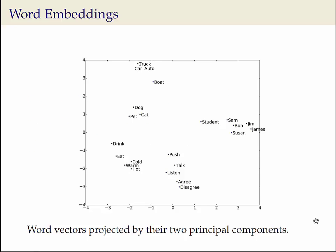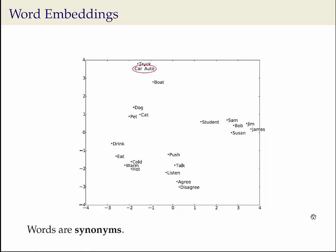Here is an example of word vectors obtained using a method called GloVe. We have projected the word vectors onto their first two principal components in order to depict them. We notice words closer to each other in this space share similar attributes. For example, we capture the synonym relationship between words, here represented by car and auto.